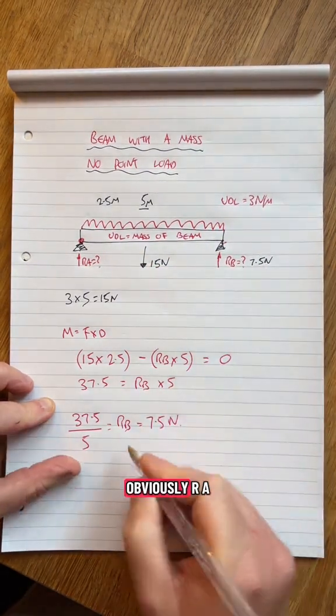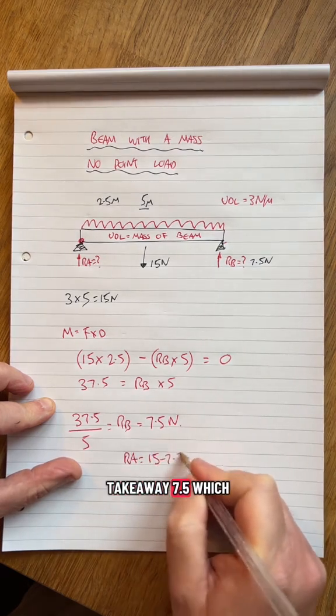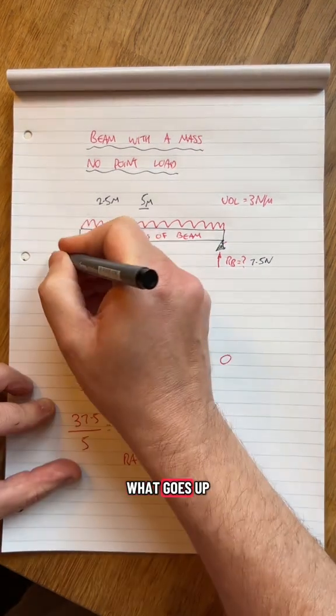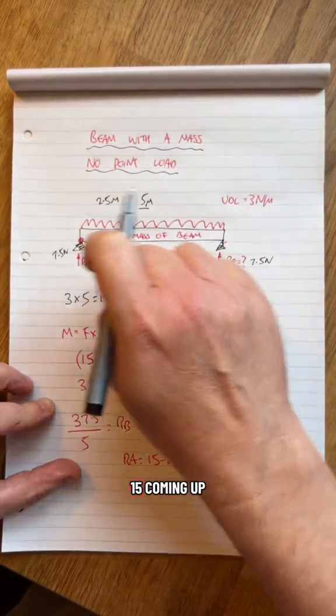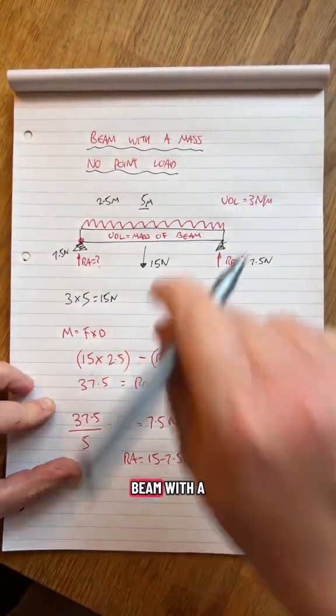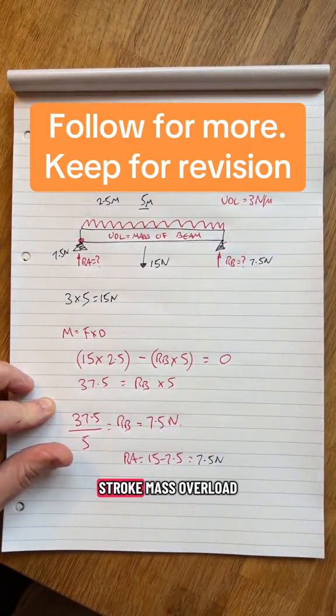Obviously RA is going to be 15 take away 7.5, which also gives me 7.5. What goes up comes down—15 coming down, 15 coming up. Beam with a UDL or mass.